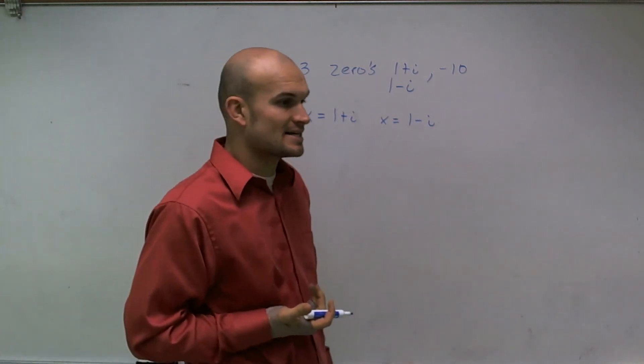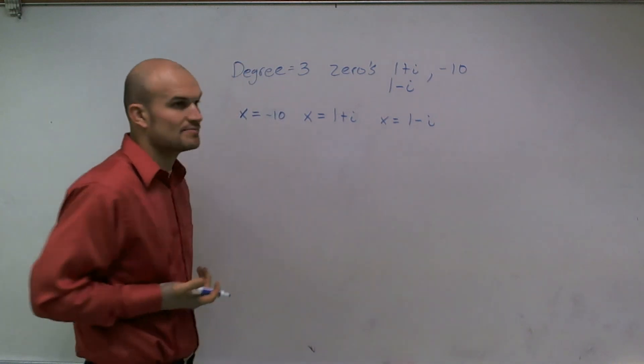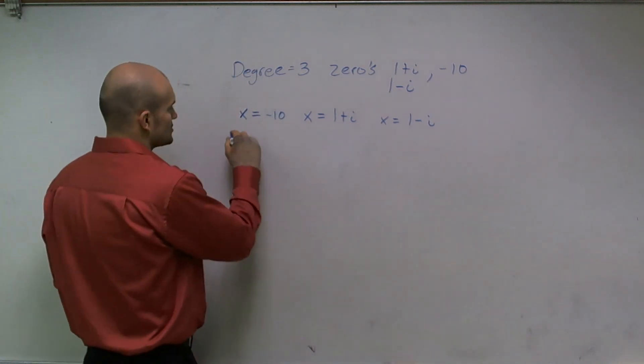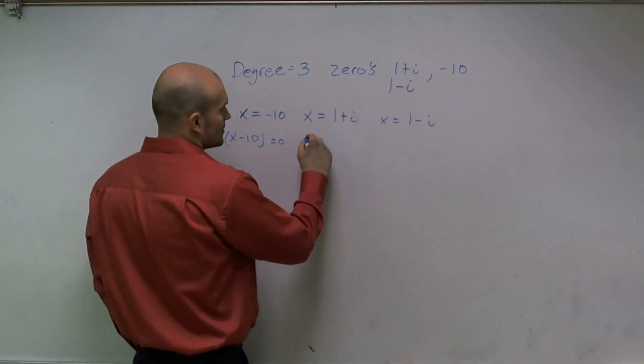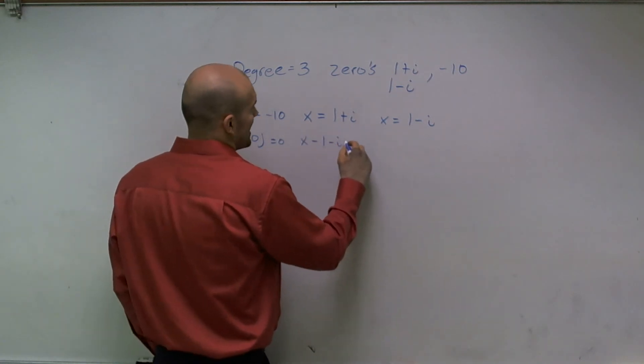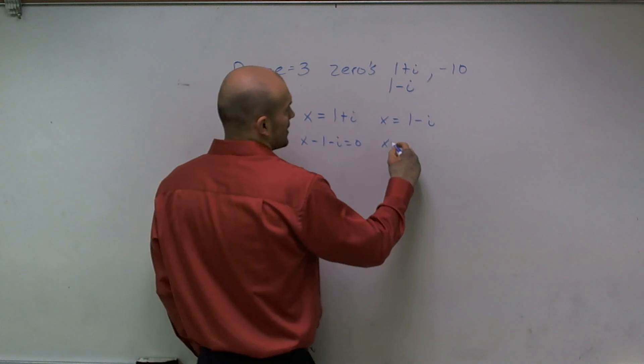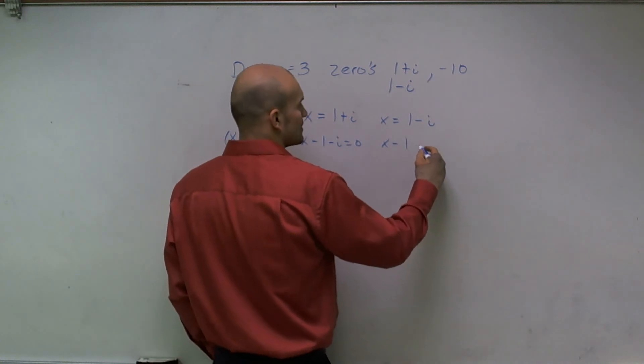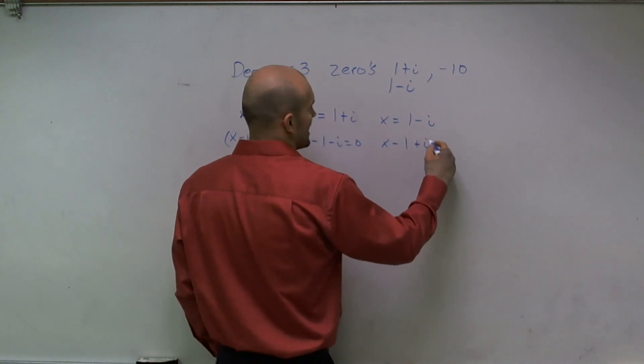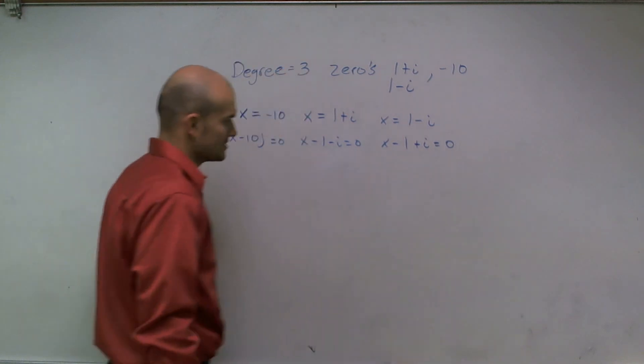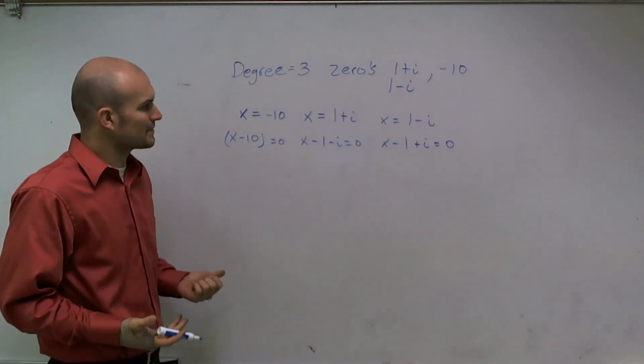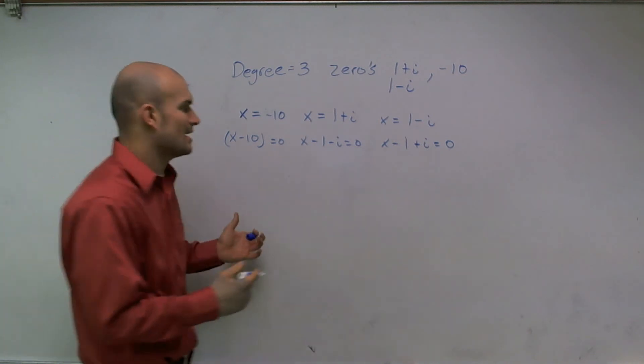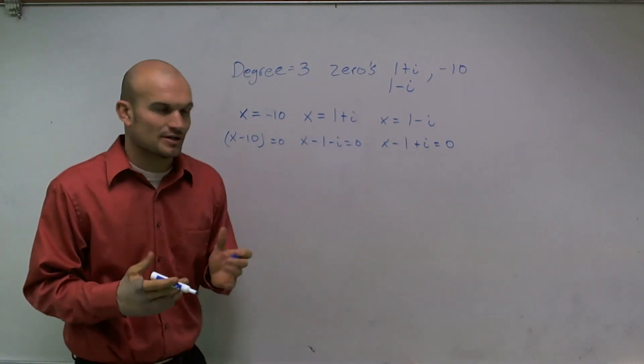So then if I want to write these as my factors, what I need to do is remember we set these equal to zero. So I can say x minus 10 is equal to zero, x minus 1 minus i is equal to zero, and x minus 1 plus i is equal to zero.